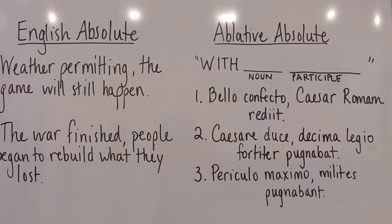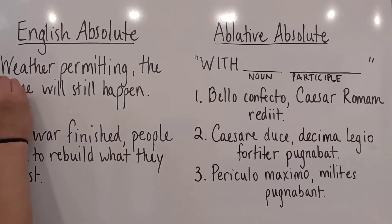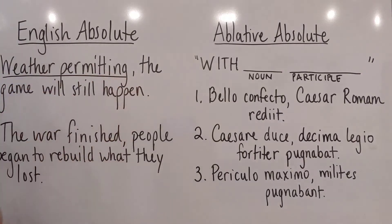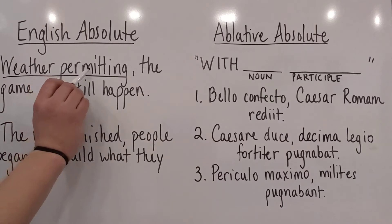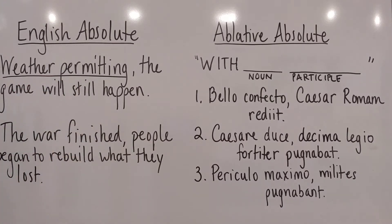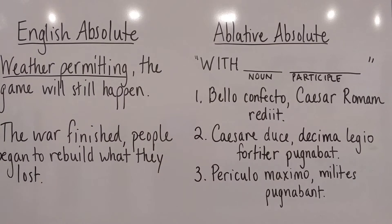For example: 'Weather permitting, the game will still happen.' You can also switch that around to say 'The game will still happen, weather permitting.' The absolute is 'weather permitting' — it's the noun 'weather' and the participle 'permitting,' just working by itself, hanging out on its own. It has nothing to do with the rest of the sentence. If we took this out, 'the game will still happen' works just fine on its own. It doesn't need 'weather permitting.'